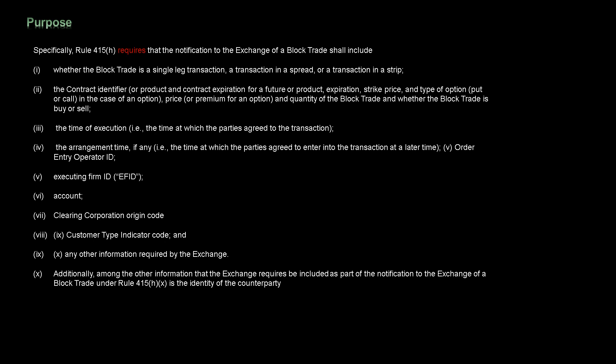Additional required information includes the account, clearing corporation origin code, customer type indicator code, and any other information required by the exchange. Additionally, among other information the exchange requires as part of the notification of a block trade is the identity of the counterparty.